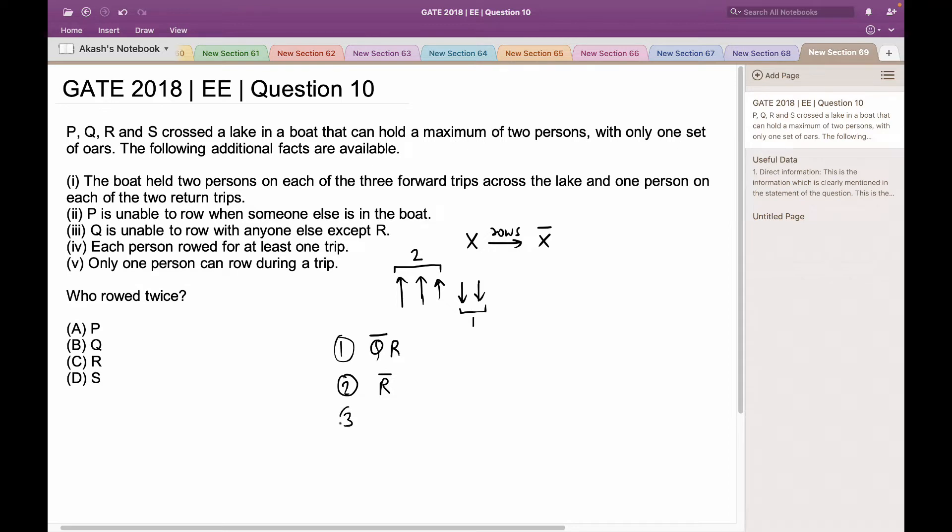Also, in the third forward trip, R has basically two choices. Either he can take P along with R, or P along with S. Let us take the first possibility, where R takes P along with him. It is given to us that P is unable to row when anyone else is in the boat. That means that R has to row with P. Once P has reached the other side, then P can return back to collect S.